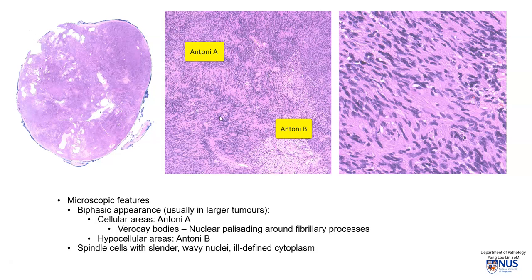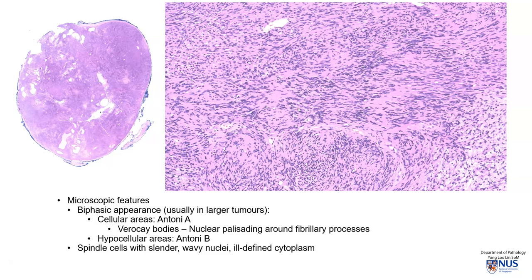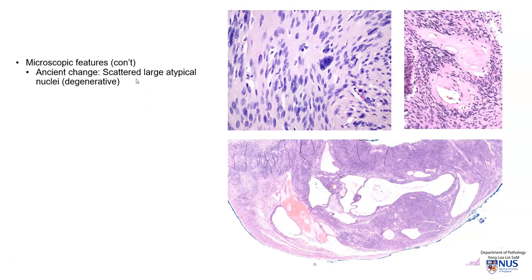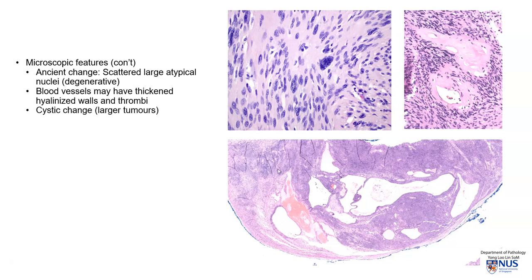Here again we can see the more cellular Antoni A areas with Verocay bodies, and the less cellular Antoni B areas. Schwannomas are composed of relatively uniform spindle cells with slender, wavy nuclei and ill-defined cytoplasm, with prominent nuclear palisading. Sometimes we may see ancient change — scattered, very large atypical-looking cells with huge nuclei and a degenerative, smudgy appearance to the chromatin; mitotic figures in these areas are very few. We also see blood vessels with thickened, glassy-looking hyalinized walls, sometimes containing small fibrin thrombi. Cystic change can also occur, as seen in this case.